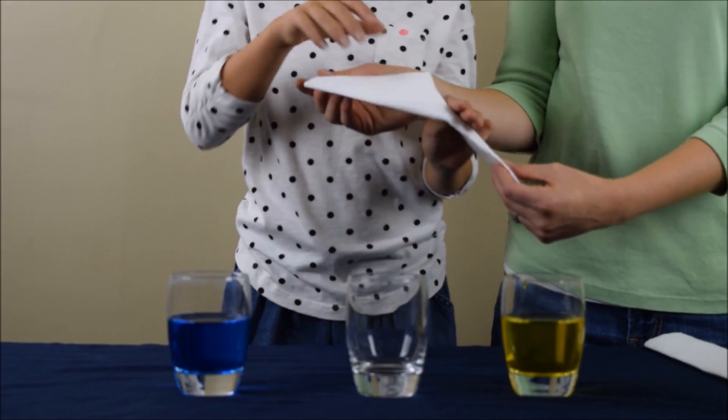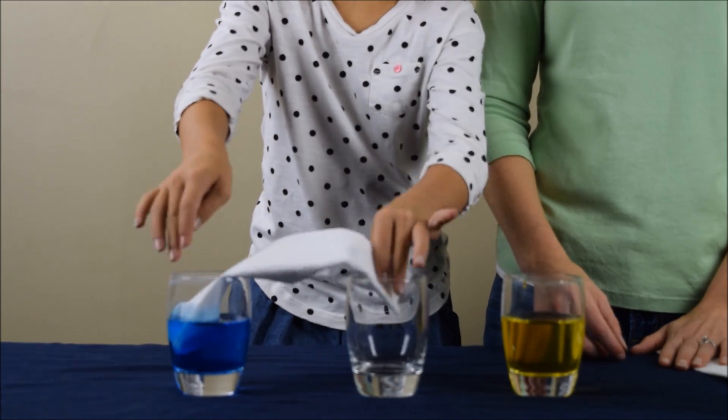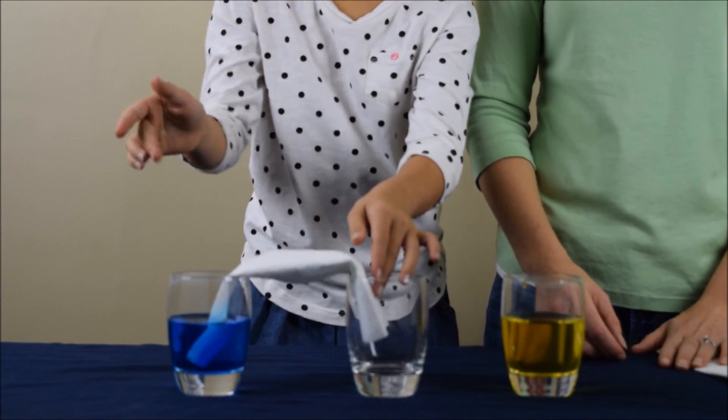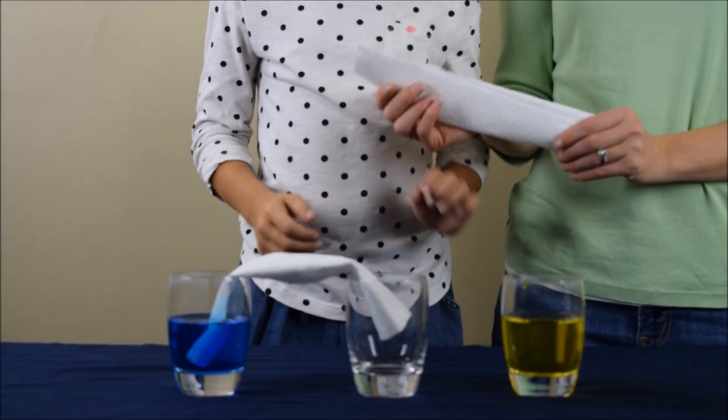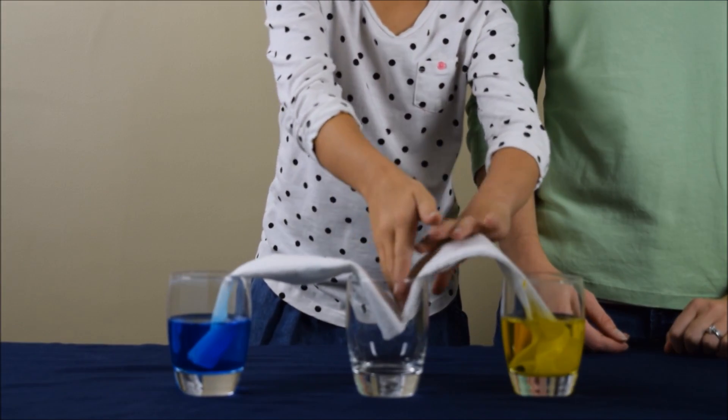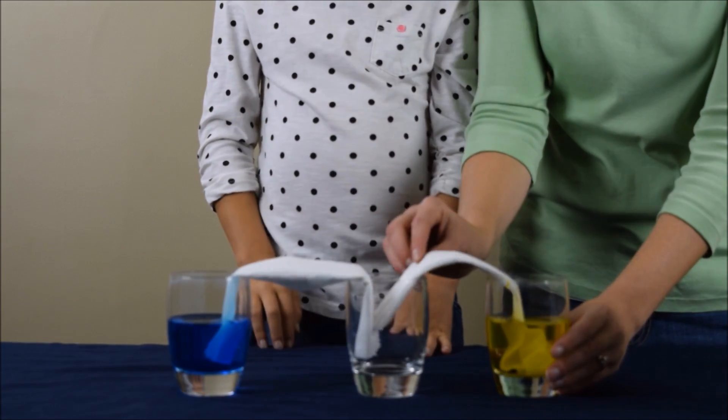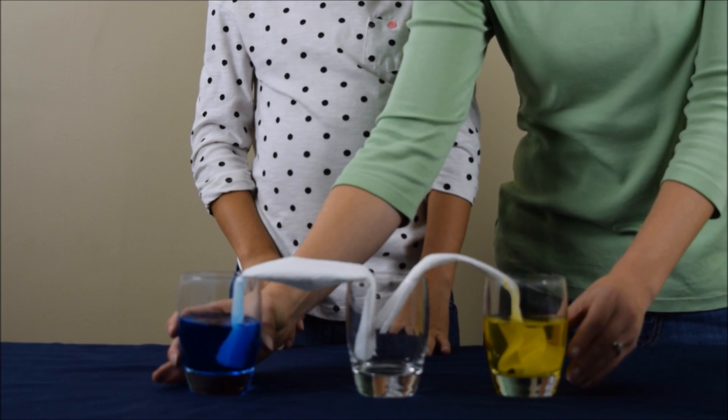This is our first paper towel. We are going to put one end into the blue water and then one end into the empty glass, just like that. We are going to take the second paper towel and put one end into the yellow water and one end into the empty glass. I think I am going to move this one just a little bit closer, and that one too.